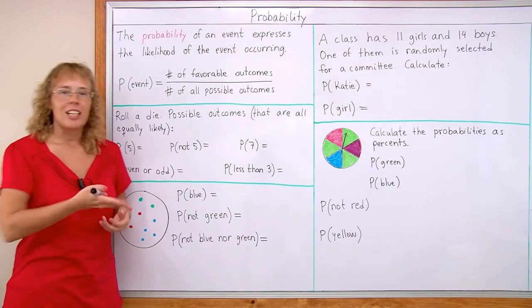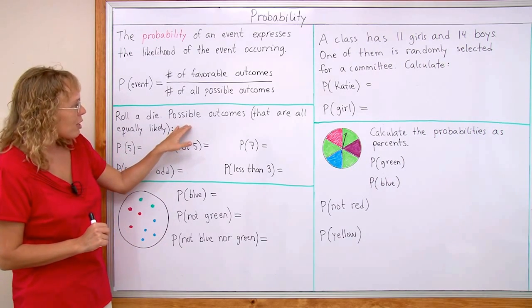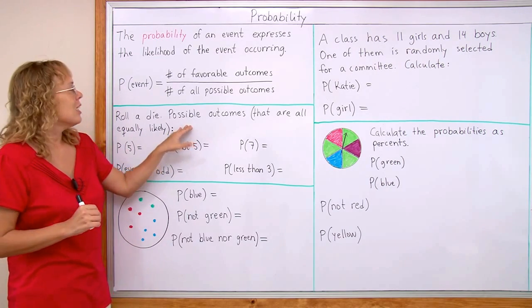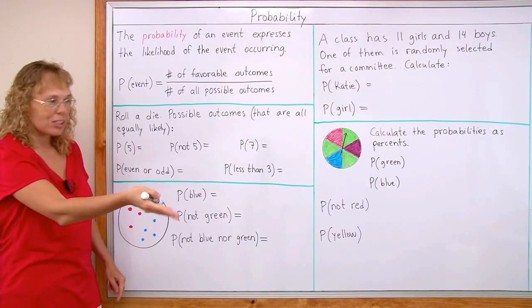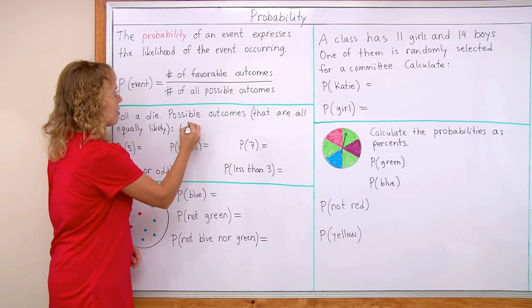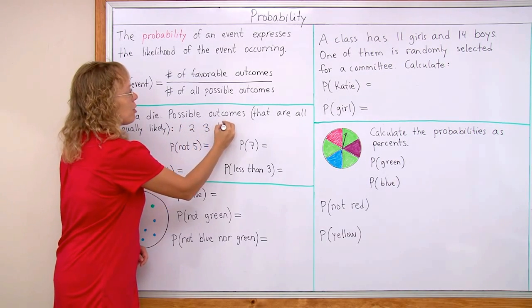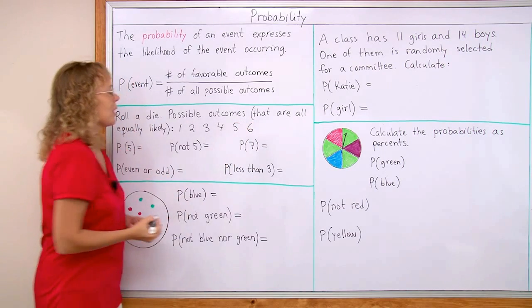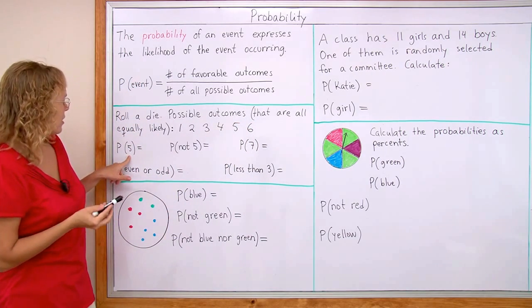For example, if we roll a die. Now, the possible outcomes, I already told you those, they are all equally likely and the possible outcomes is that you can get one when you roll it or you can get two or three or four or five or six. Each one of those are equally likely. So here's an event.